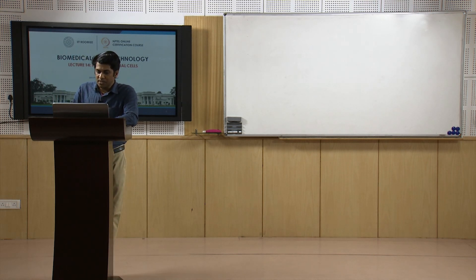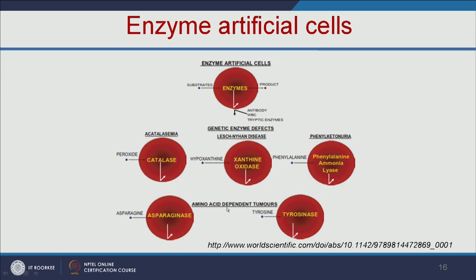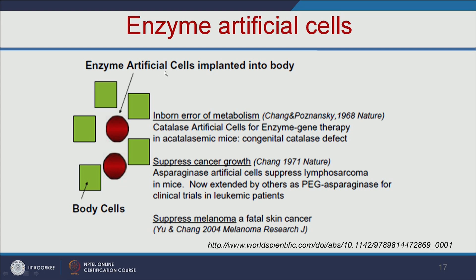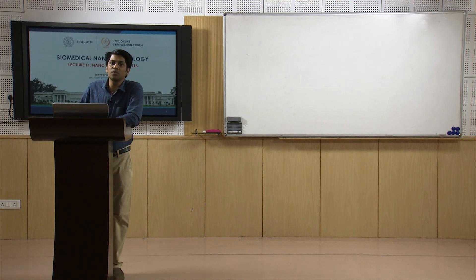We can also use enzyme-loaded artificial cells for cancer therapy. Some tumors are amino acid dependent — for example, asparaginase can remove asparagine, and tyrosinase can remove tyrosine required for melanoma growth. Catalase artificial cells for enzyme gene therapy were used in a mice model lacking the catalase enzyme, and asparaginase artificial cells can suppress lymphosarcoma and melanoma in mice models. There are four routes of administration for enzyme artificial cells: implantation to work with body cells, injection, retention in a chamber outside the body where patient blood is filtered and returned, or oral administration removed by excretion.